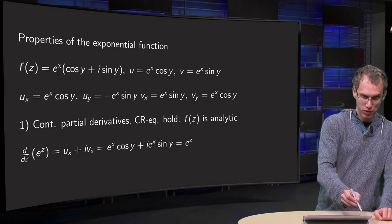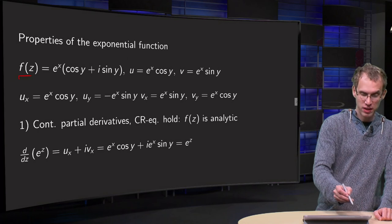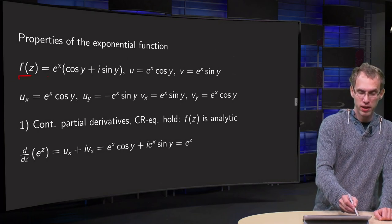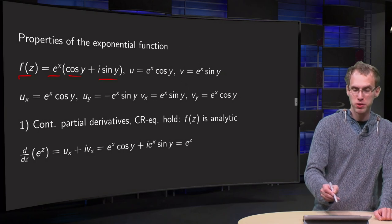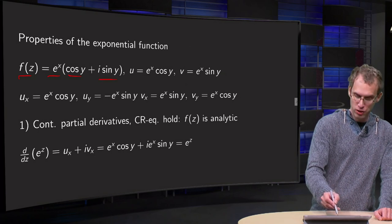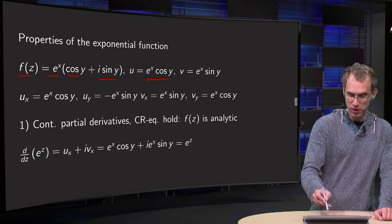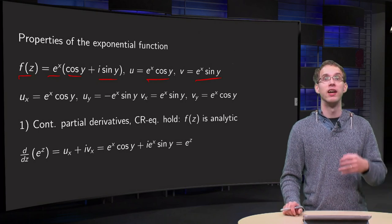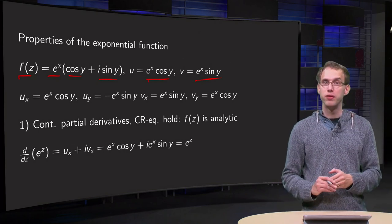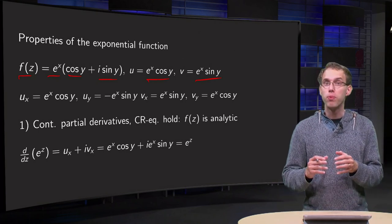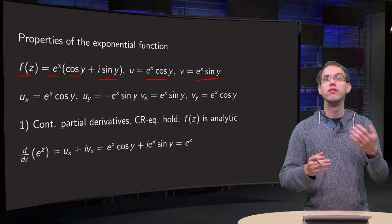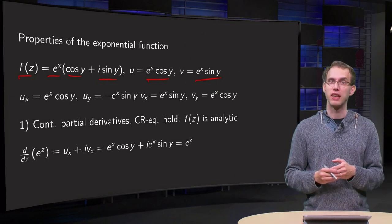So we have our exponential function f of z equals — if we put z equals x plus iy — e to the power x times (cosine y plus i times sine y), so u equals e to the power x times cosine y, and v equals e to the power x times sine y. We are going to check a few properties of this exponential function, such as the derivative.